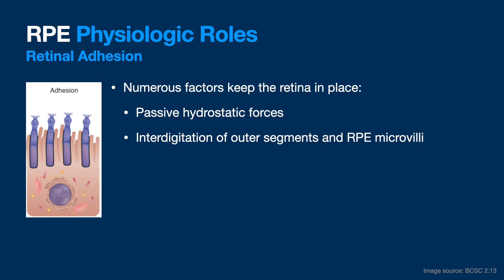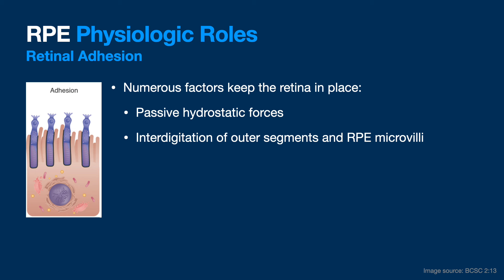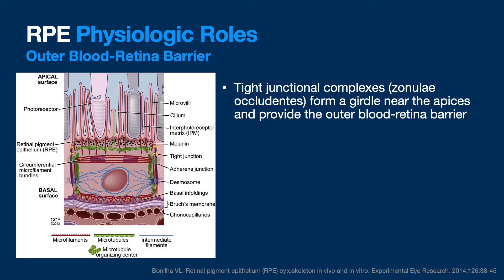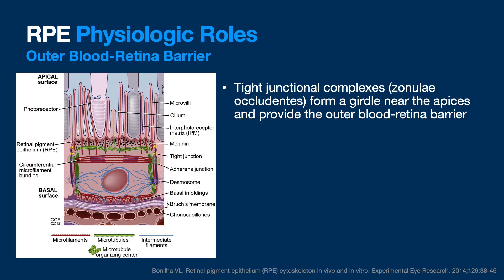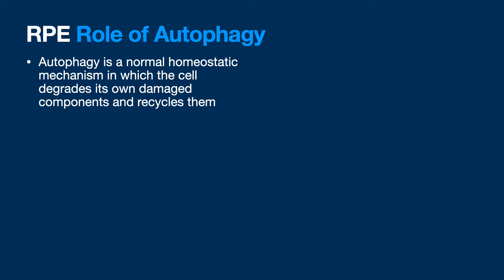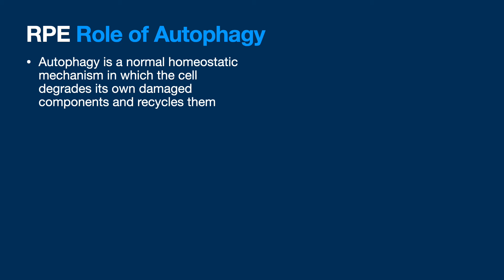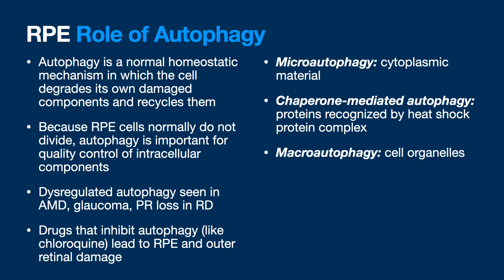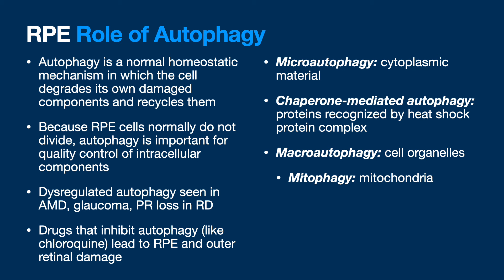Adhesion: the RPE has a lot to do with keeping the retina in place through passive hydrostatic forces, active transport of fluid, interdigitation, van der Waals forces, and the outer blood-retinal barrier tight junctions. The retina and RPE are not covalently bonded — they're just next to each other from when the optic cup was forming. Autophagy means destruction of cell organelles. RPE cells are not regenerating like your skin, so they must recycle damaged material. Macroautophagy involves cell organelles, microautophagy involves cytoplasmic material, and mitophagy involves destruction of mitochondria.